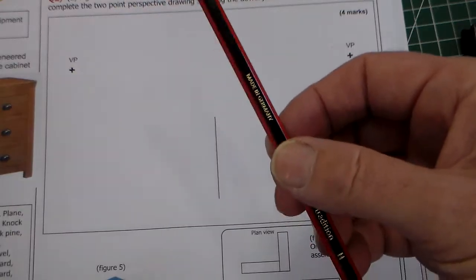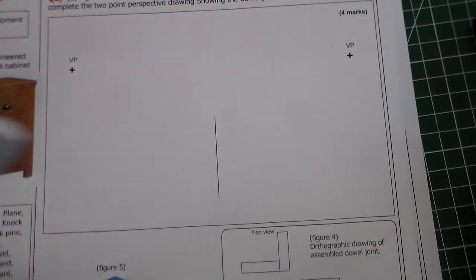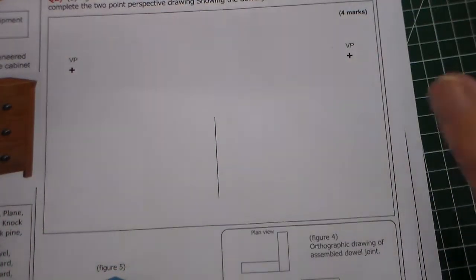So in the DT exam it's always useful to have a ruler, a pencil, a rubber and probably a fine liner as well.